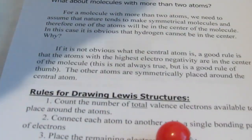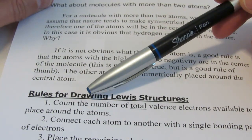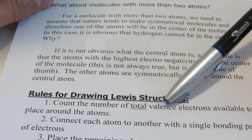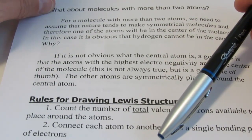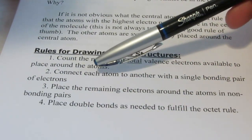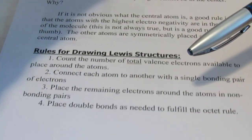So let me just quickly go over these rules for drawing a Lewis structure with you one more time. When you draw a Lewis structure, count the number of total valence electrons available to place around the atoms. Get a total and you're going to connect each atom to another with a single bonding pair.